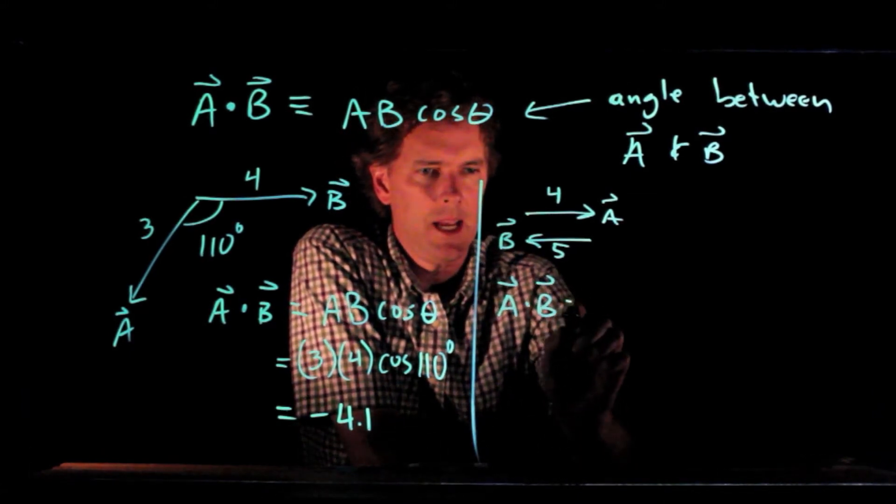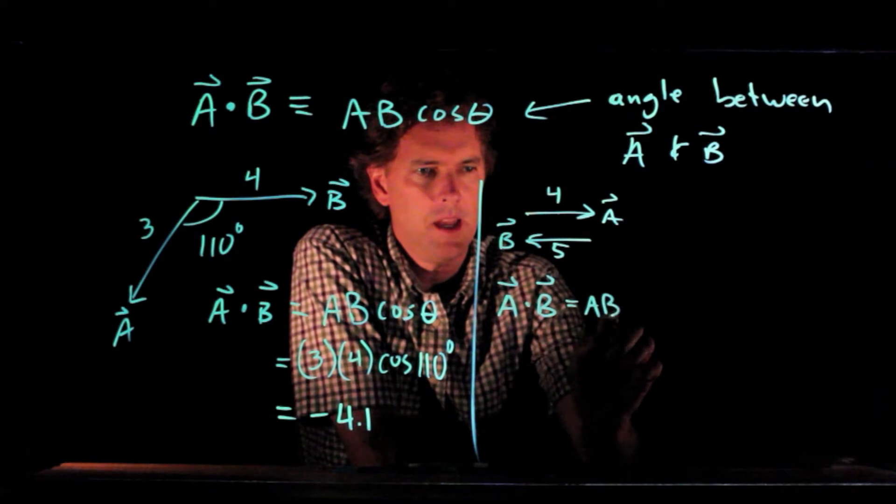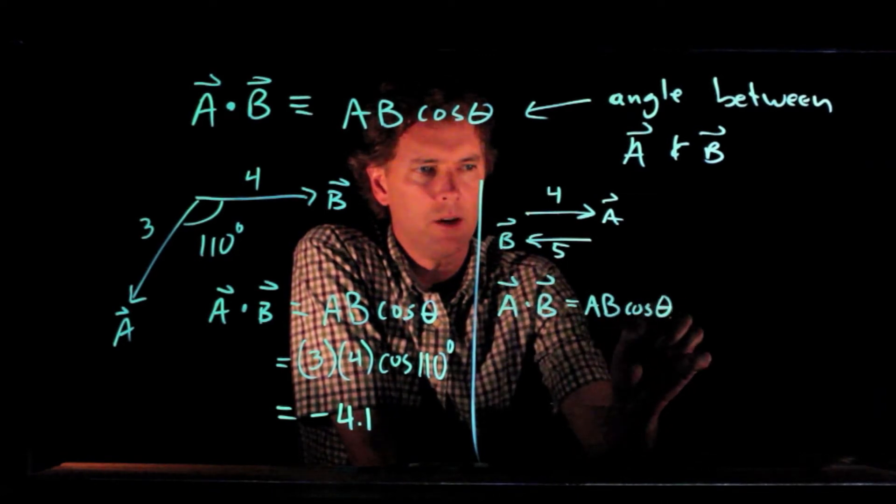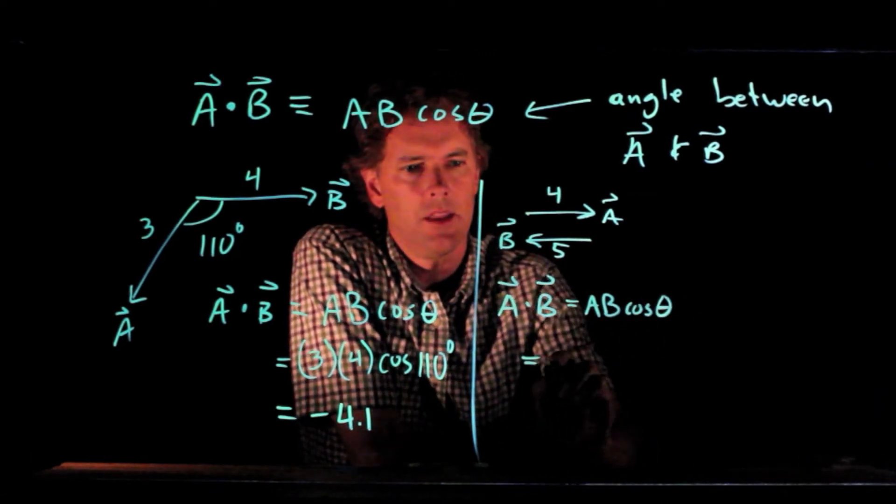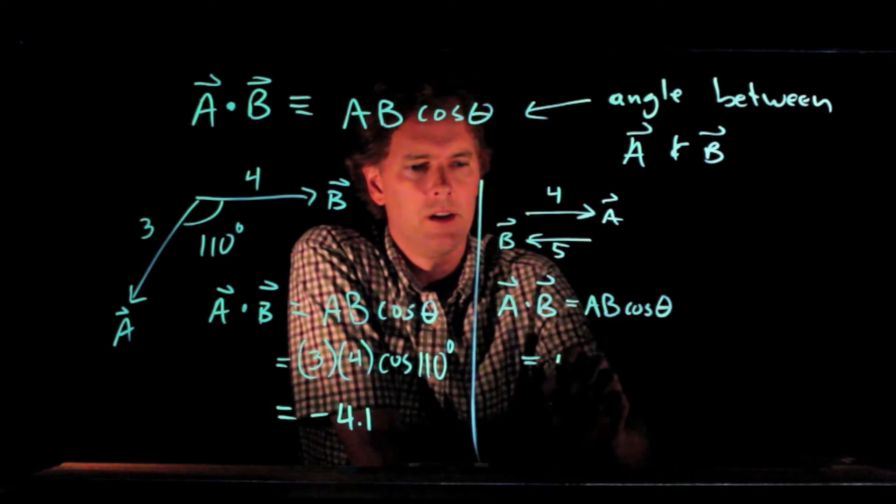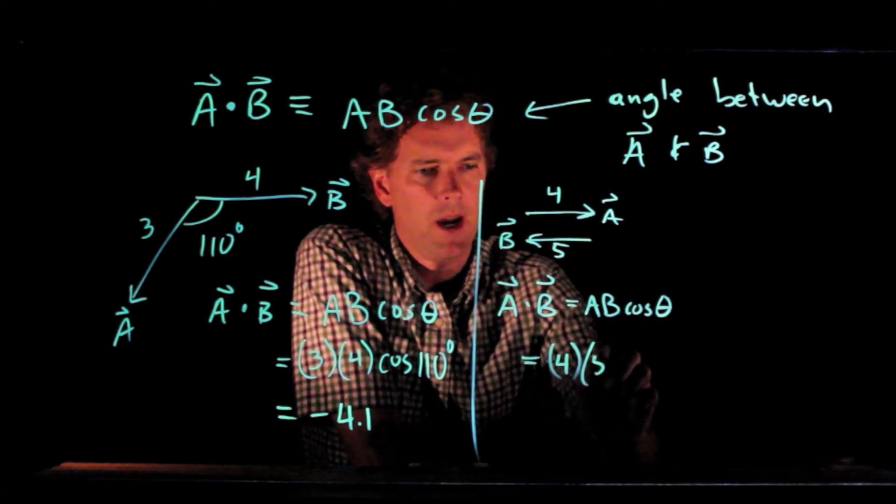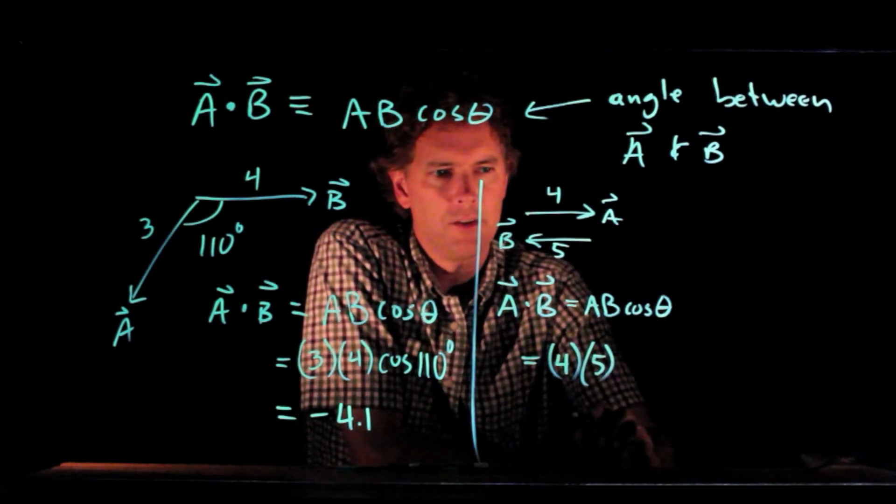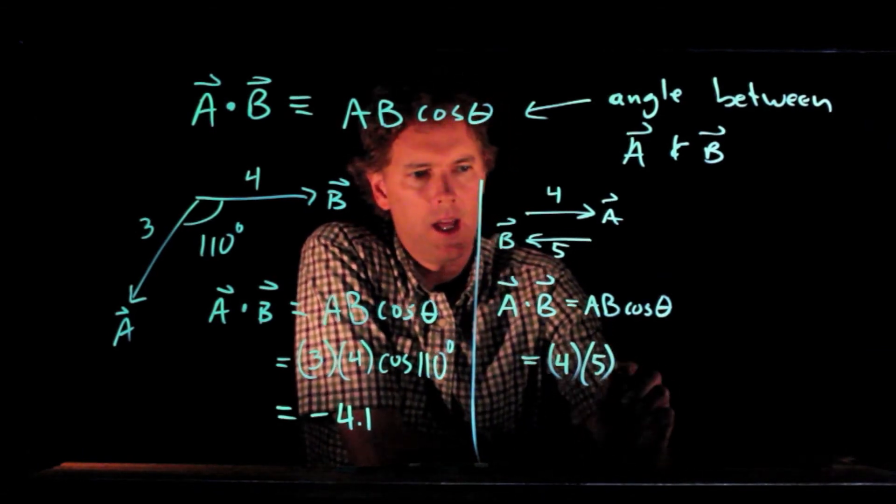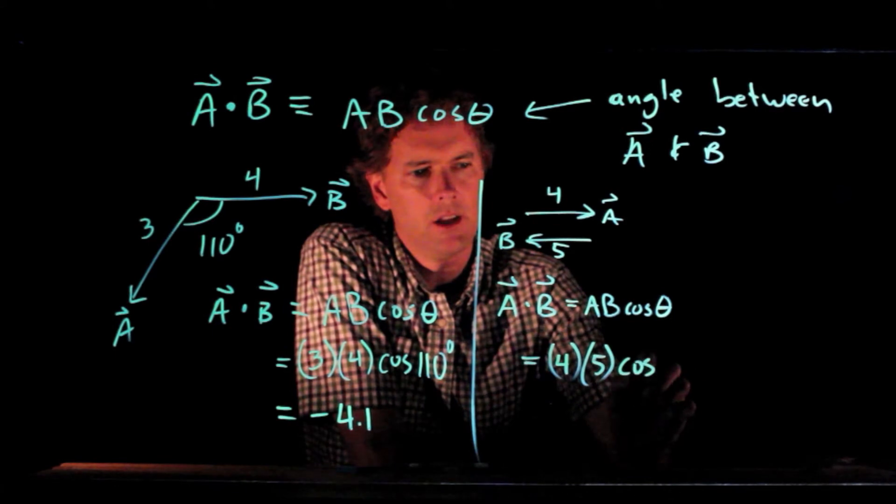What is A dot B? Well, again, A dot B is AB cosine of the angle between them. And in this case, we have magnitude 4 for vector A, magnitude 5 for vector B, and theta is what?